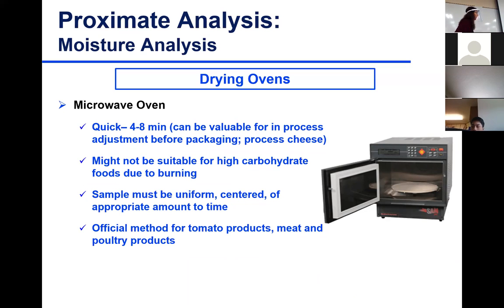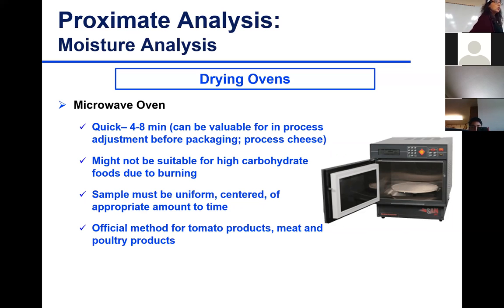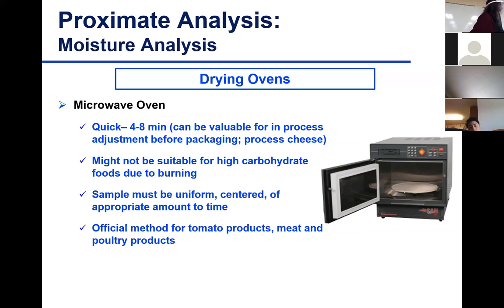Another oven is the microwave oven — you will also have samples dried using it. It's very fast, just a few minutes depending on the sample, typically four to eight minutes. It is really good for cheese products — processed cheese, cheddar cheese — and is often used during processing as a quick quality check. It's not suitable for high-carbohydrate samples; you might get burning of the carbohydrate. So products like baby cereal, Cheerios might not be a great application.